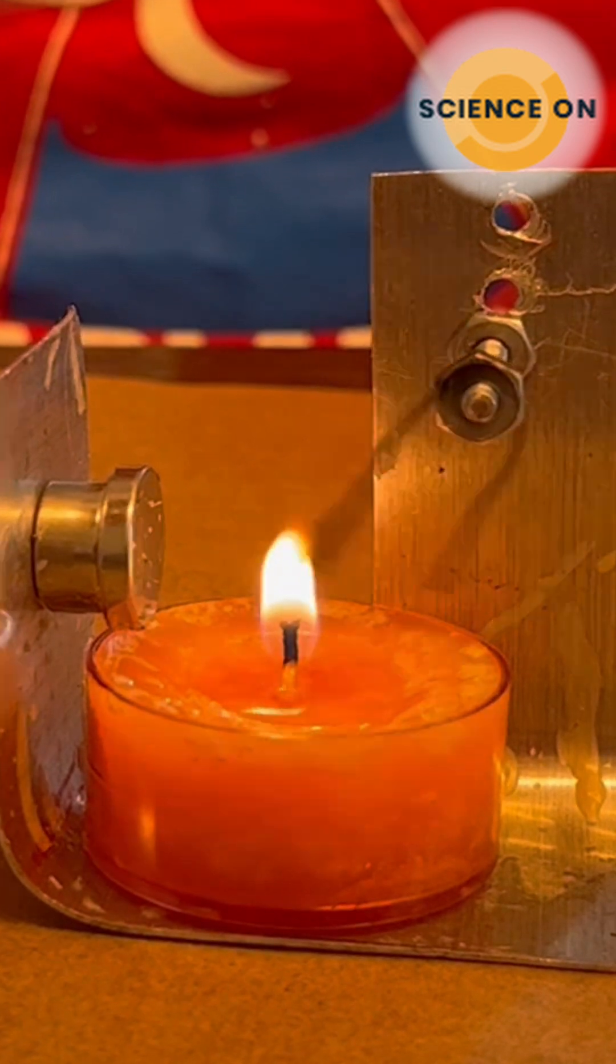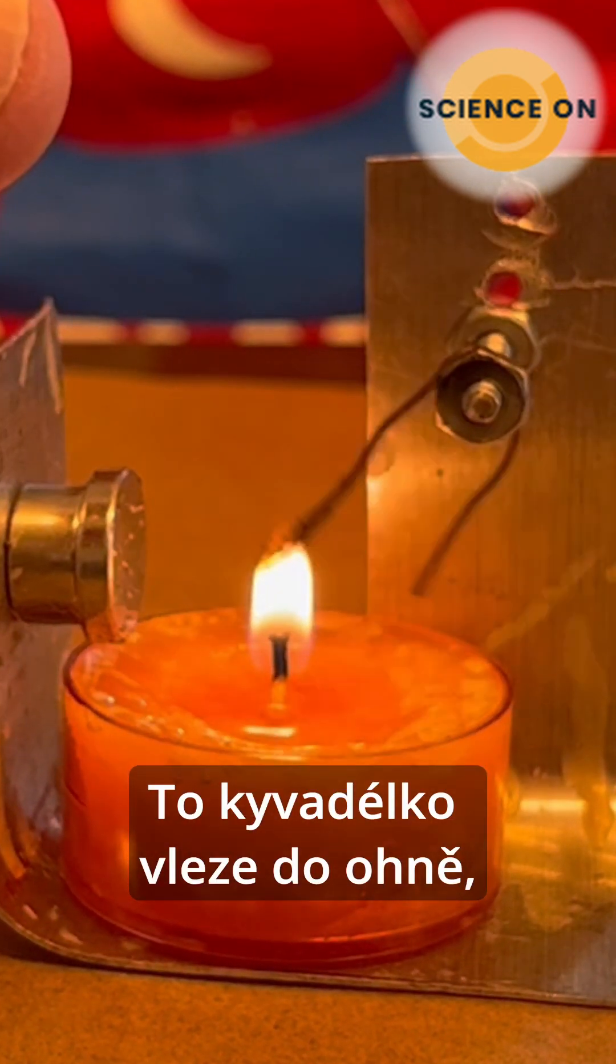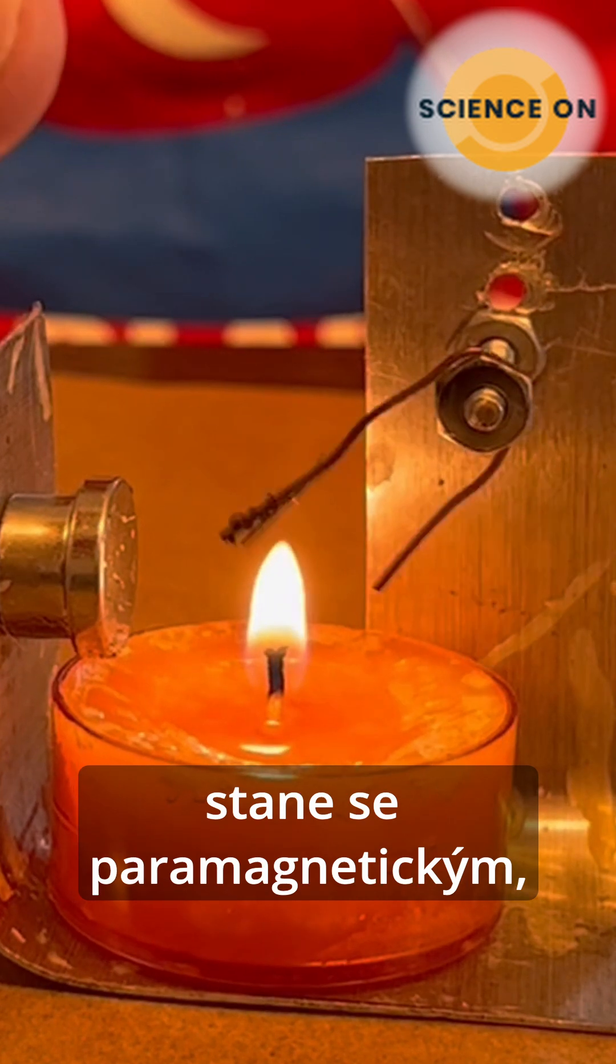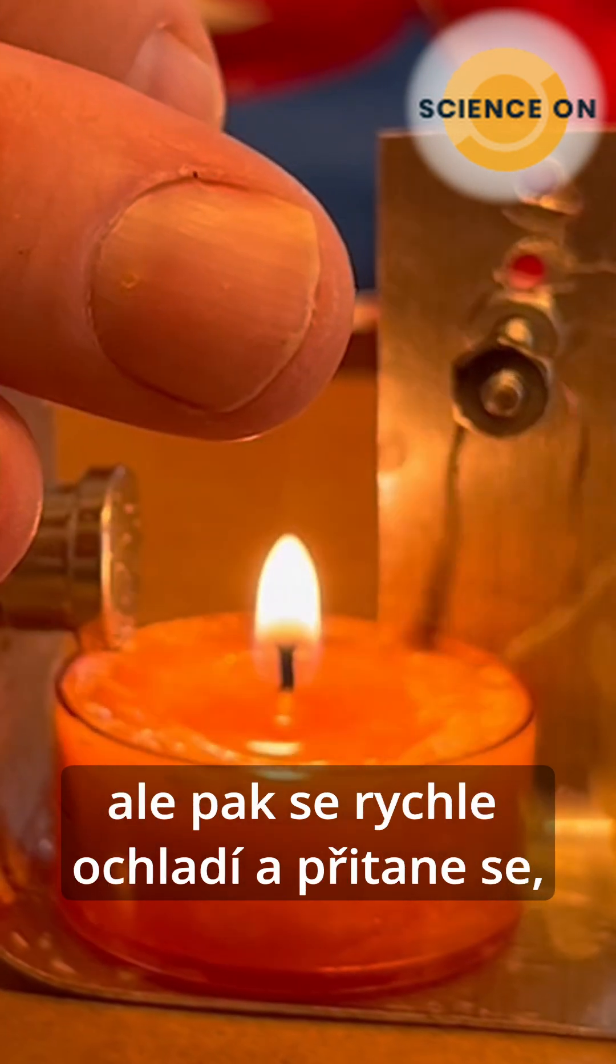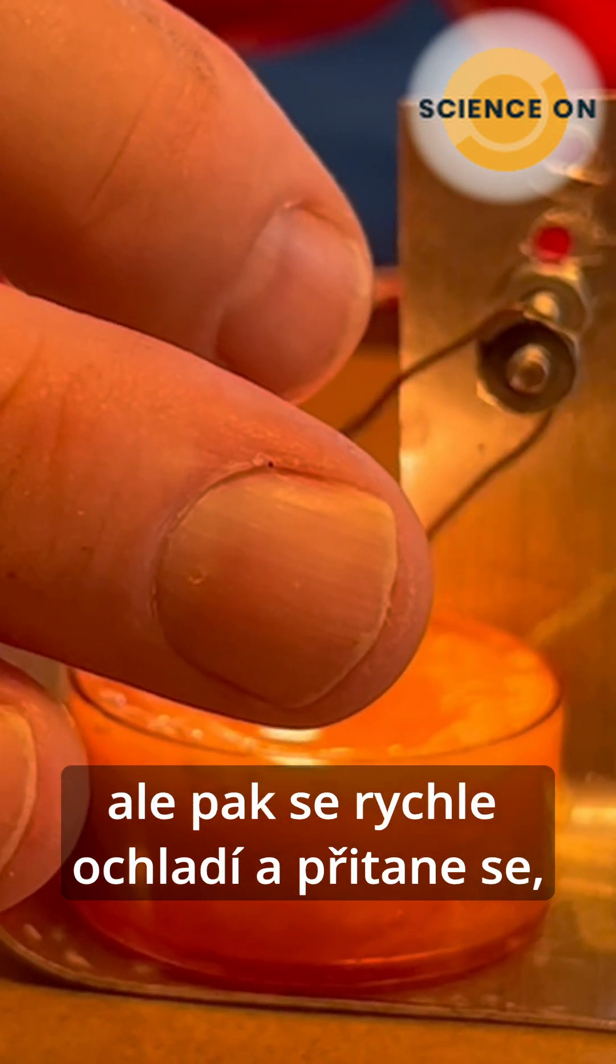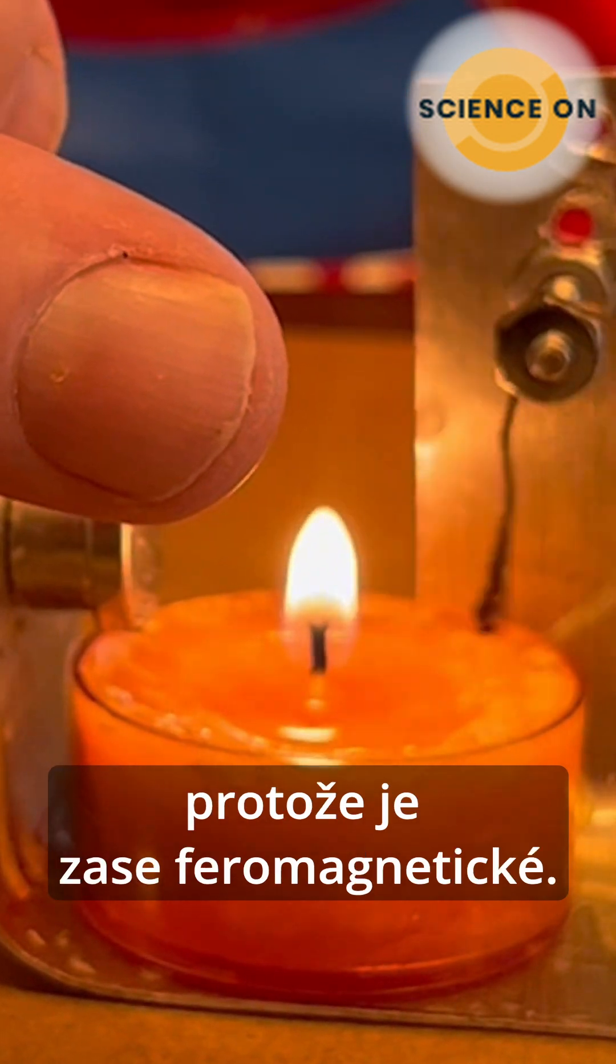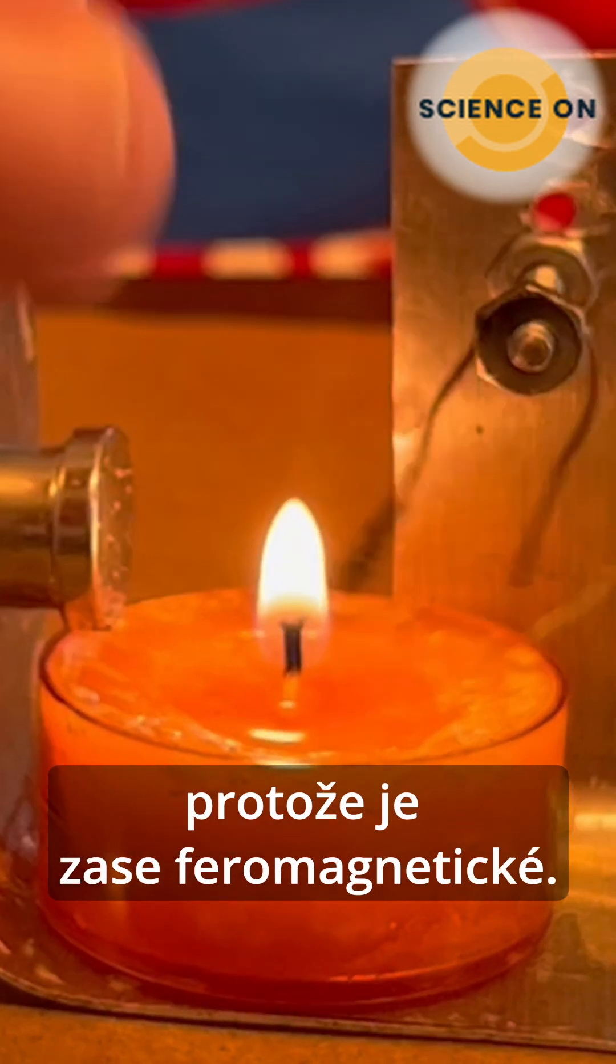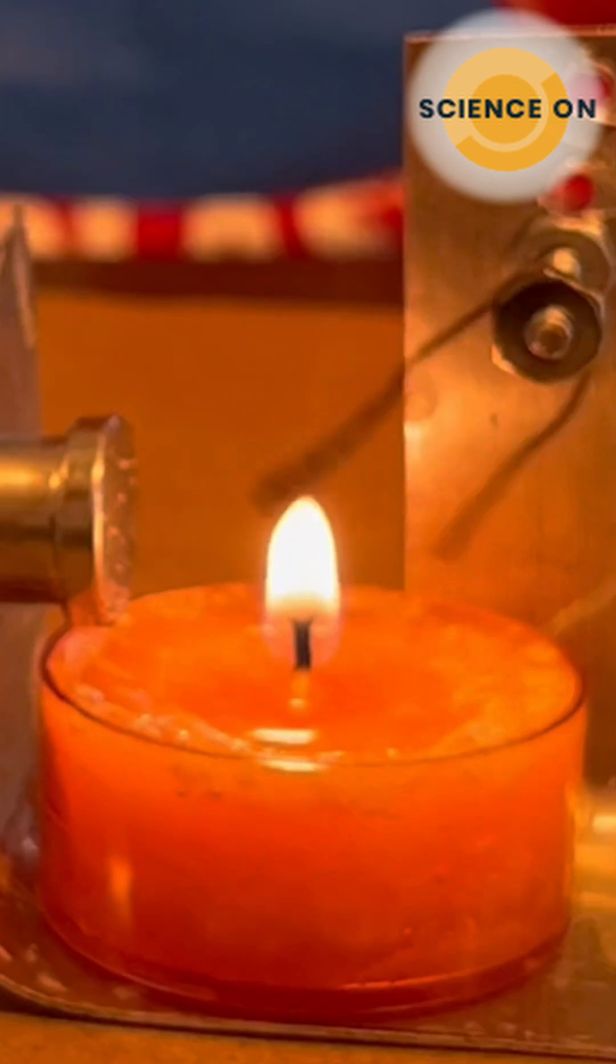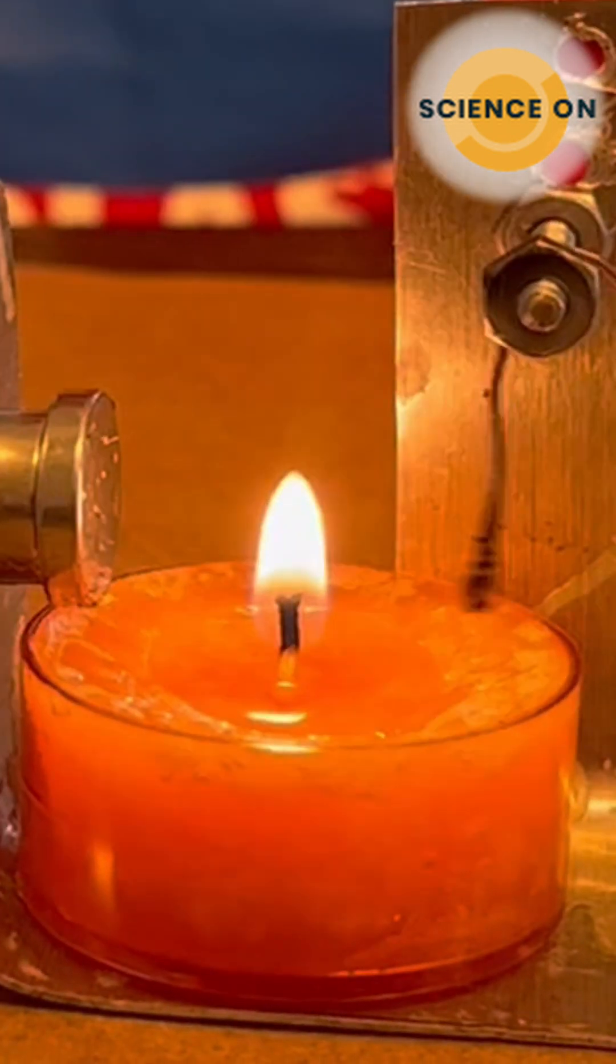So what's going on here is first it goes in the flame, becomes paramagnetic, falls, but then it cools rapidly and is again attracted because it is once again ferromagnetic. So it goes between those two states quite rapidly, as you can see.